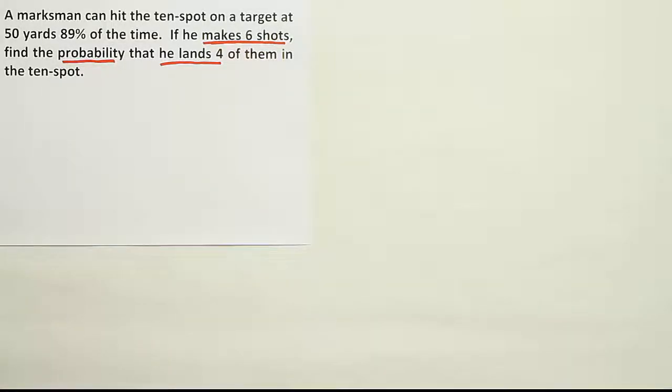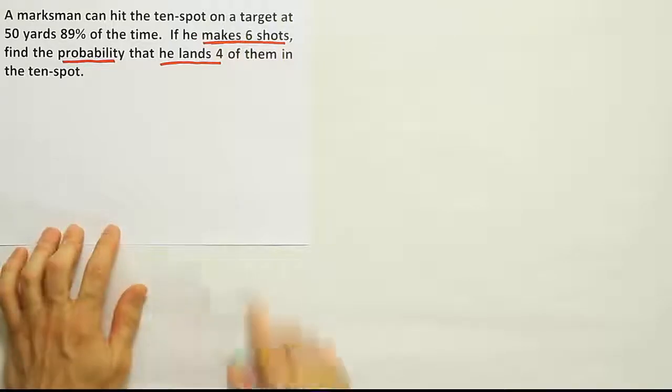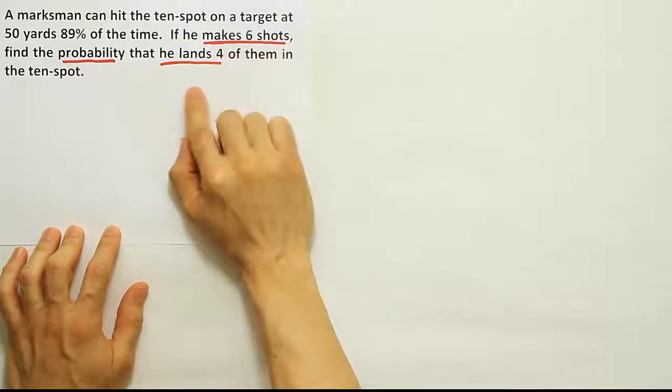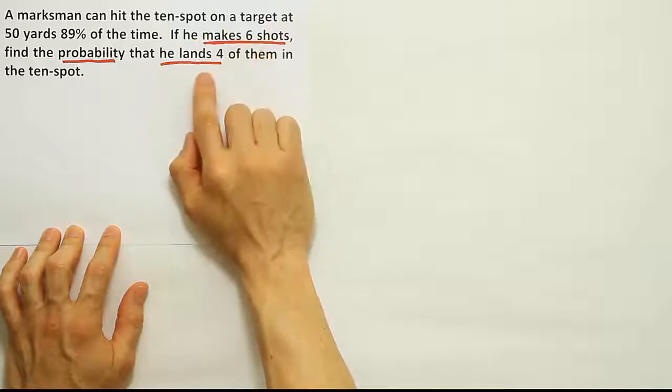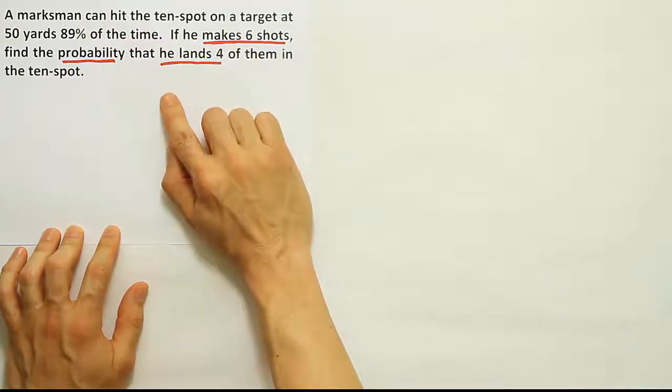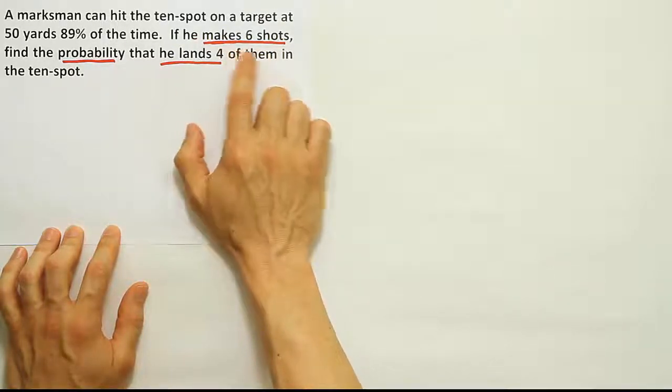If it's just regular multiplication rule of probability, then we would end up having all six shots end up in the bullseye, right? Or all six shots miss. But this idea of having the subset behave differently from the rest, that indicates binomial probability.